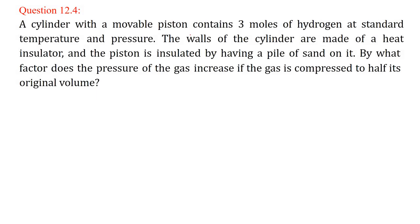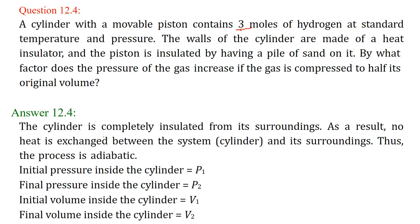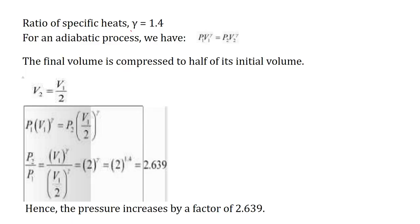A cylinder with a movable piston contains 3 moles of hydrogen at standard temperature and pressure. The walls of the cylinder are made of heat insulator and the piston is insulated by having a pile of sand on it. By what factor does the pressure of the gas increase if the gas is compressed to half its original volume? The cylinder is completely insulated from the surroundings, meaning there is no heat exchange — the process is purely adiabatic. So initial pressure P1, final pressure P2. Initial volume V1, final volume V2. The ratio of specific heat gamma is 1.4, which we know from theory.